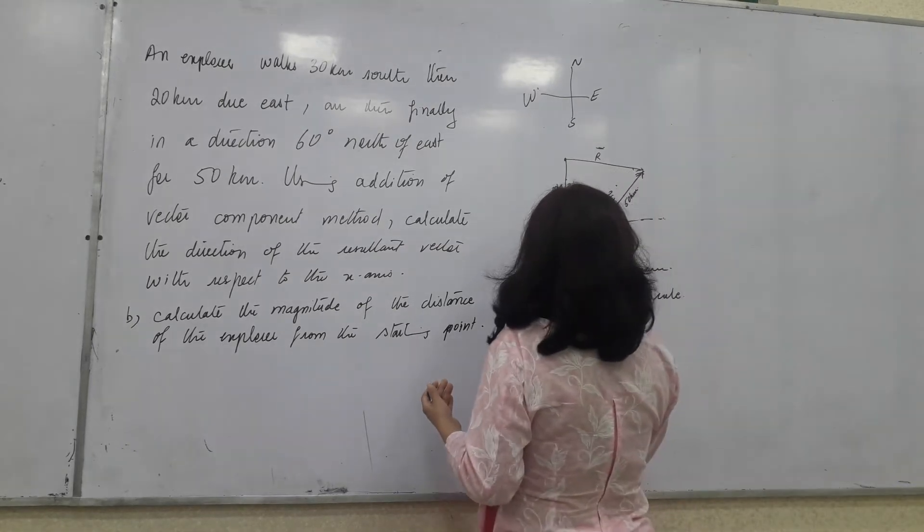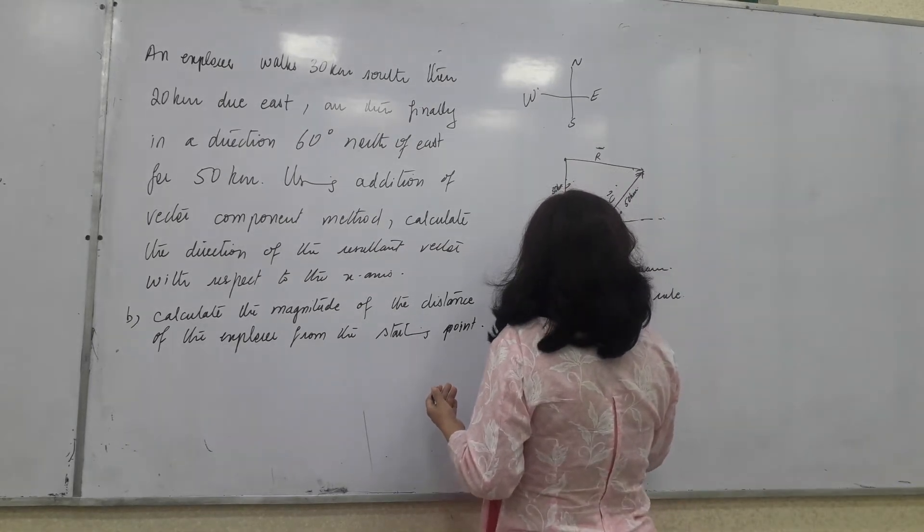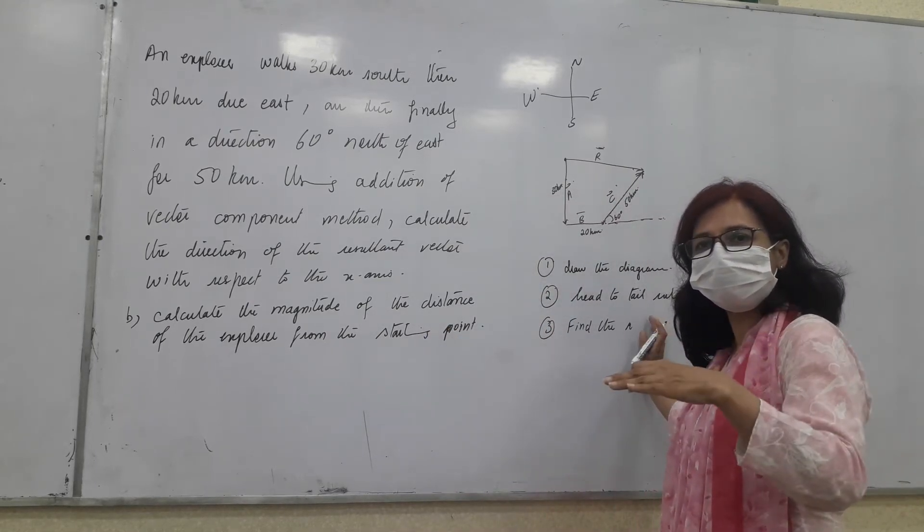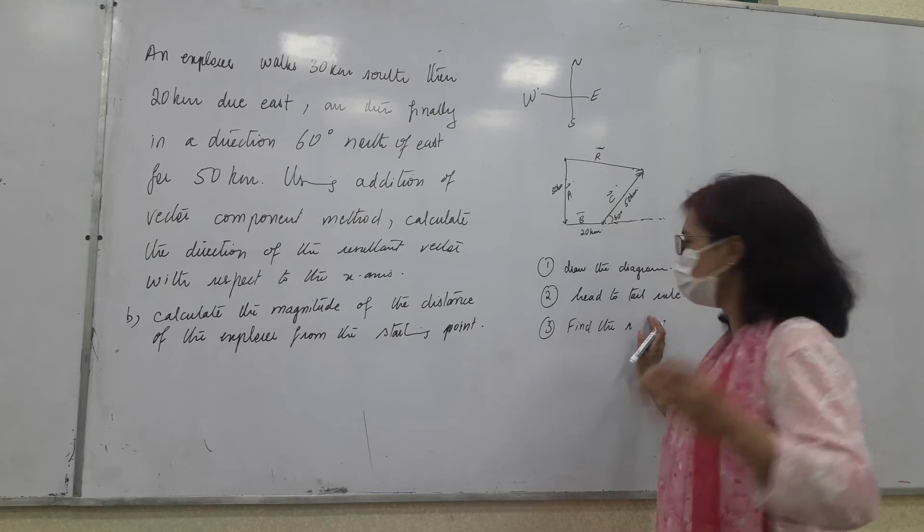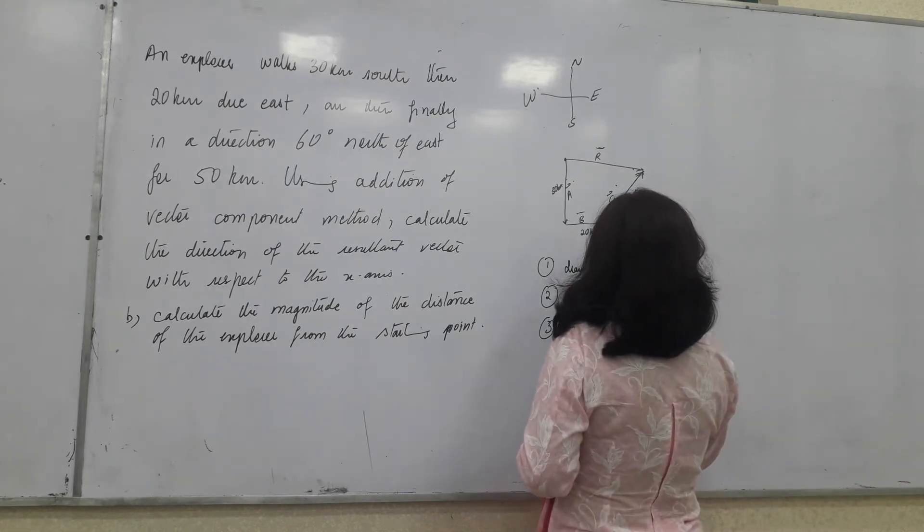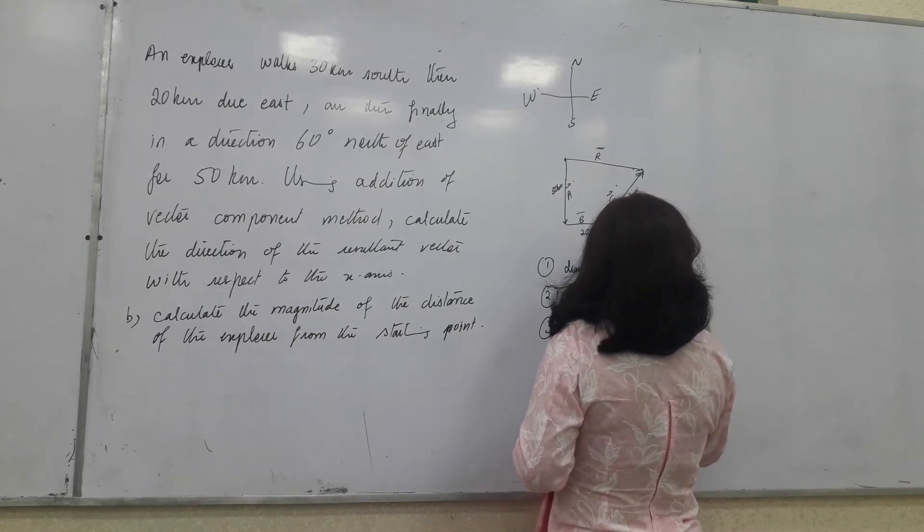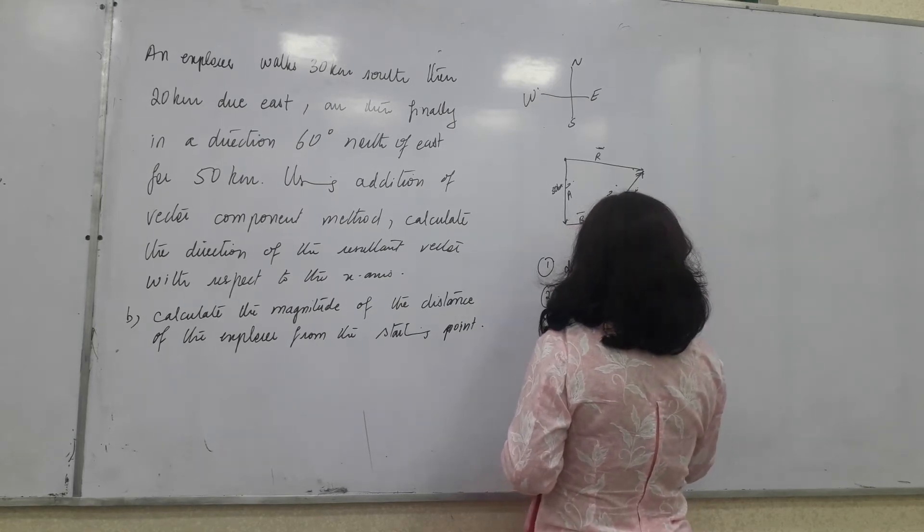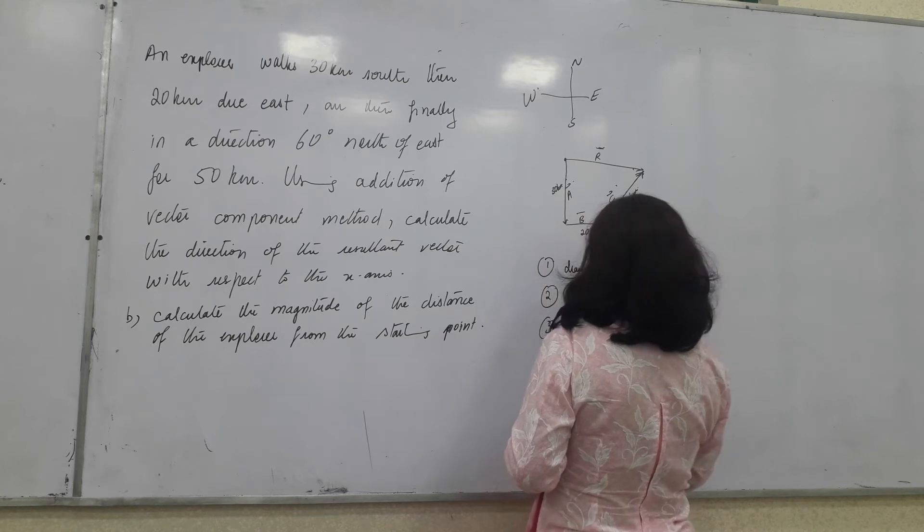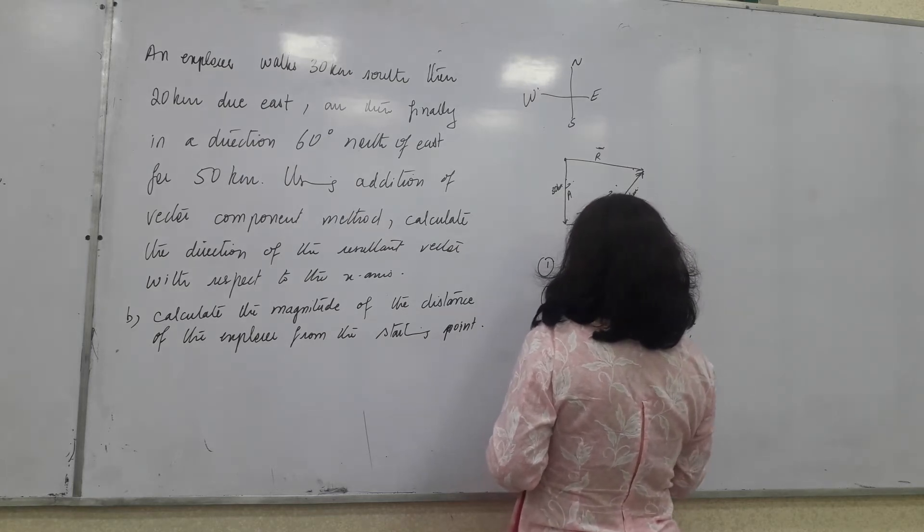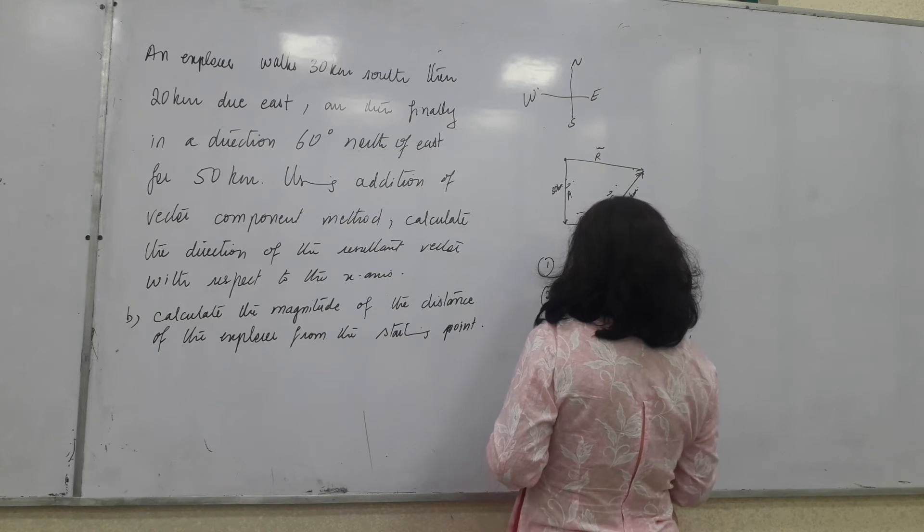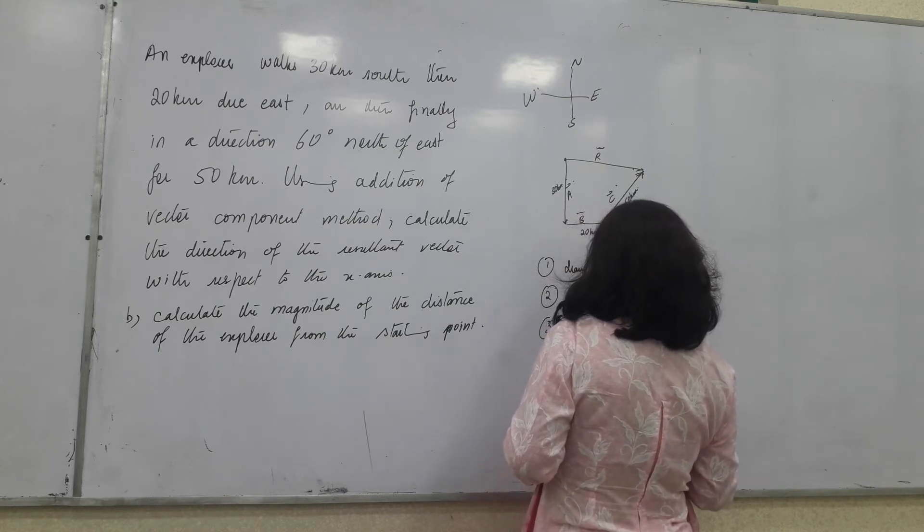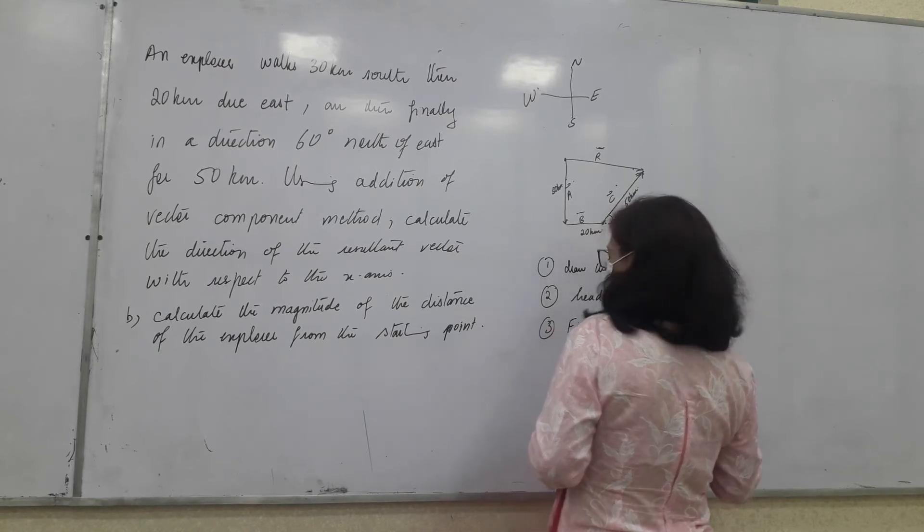Next step is, you will find the components, find the rectangular components. So, rectangular means perpendicular one along x-axis and one along y-axis. The rectangular components of each vector. This means, that you will find Ax, Ay, Bx, By, Cx, Cy. What next?